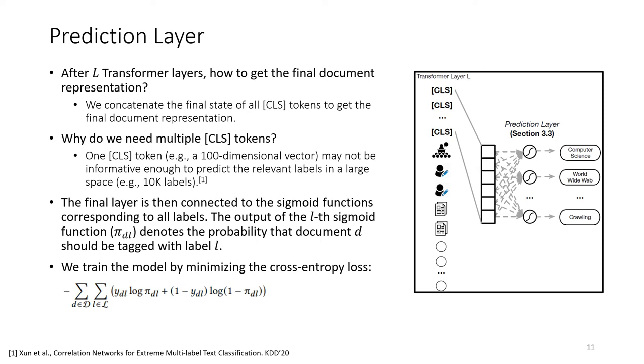For example, tens of thousands of labels. Therefore, if we have multiple CLS tokens, the final representation will be longer and more expressive. And the final layer is then connected to the sigmoid functions corresponding to all the labels. For example, the output of the first sigmoid function here denotes the probability that the document should be tagged with computer science. And finally, we train the model by minimizing the cross-entropy loss.